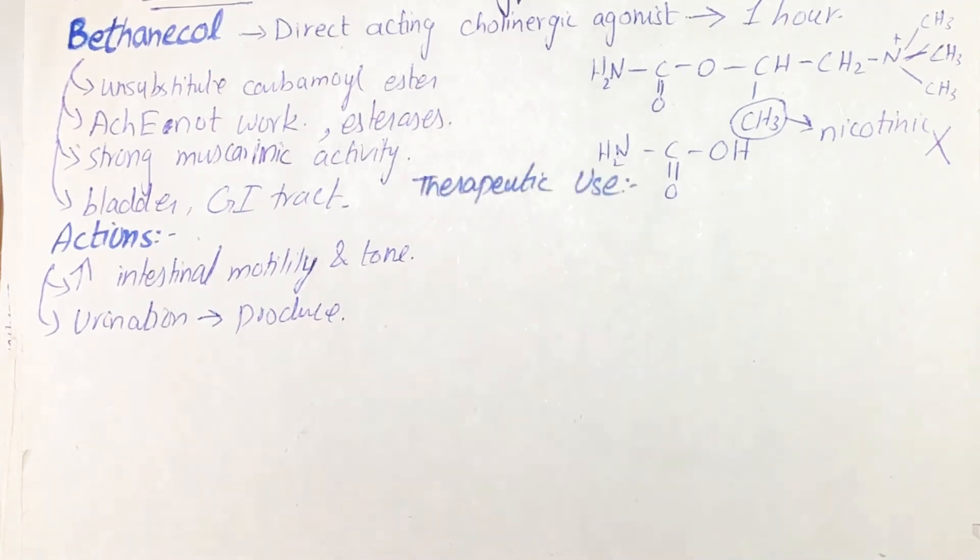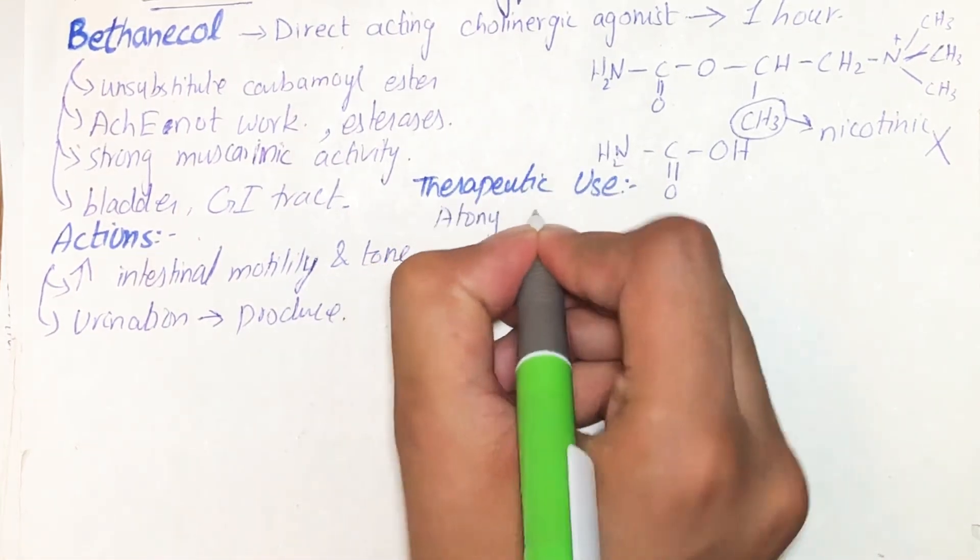If we talk about the therapeutic uses of bethanechol, it is used in urological conditions such as to treat atonia of the bladder.